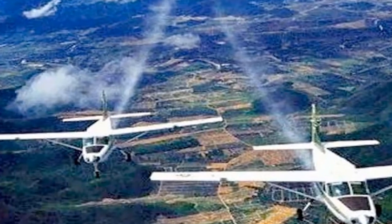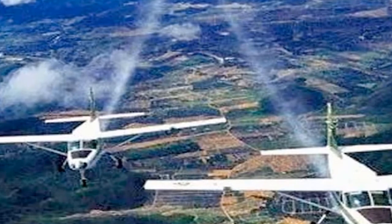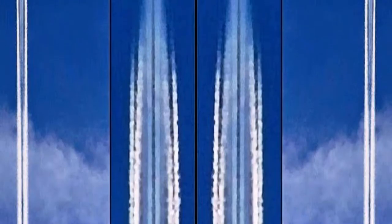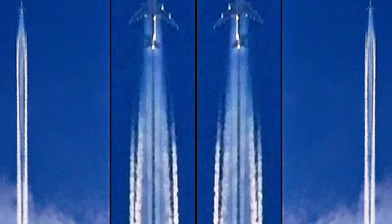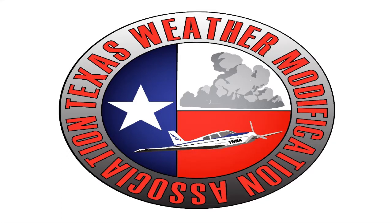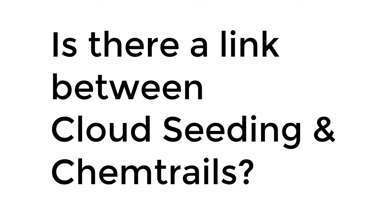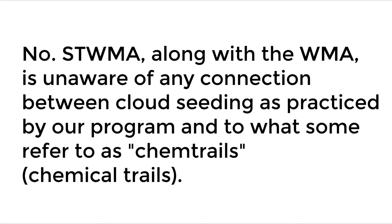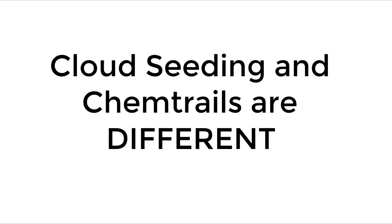Cloud seeding is performed in lower altitudes where rain or nimbus clouds accumulate. Chemtrails are sprayed at much higher altitudes in the stratosphere and create cirrus clouds. In an official statement by the South Texas Weather Modification Association, when asked if there was any link between cloud seeding and chemtrails, they replied that the STWMA along with the WMA is unaware of any connection between cloud seeding as practiced by their program and what some refer to as chemtrails.